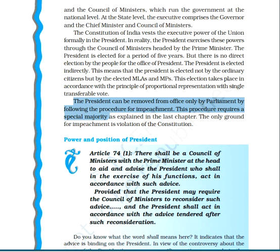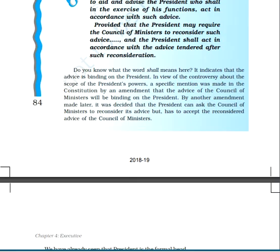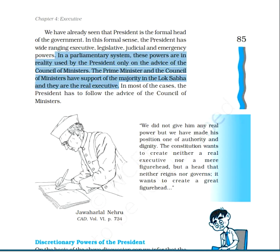The president can ask the council of ministers to reconsider a matter, but after reconsideration, if the council passes that advice again, the president shall act in accordance with the advice tendered after such reconsideration. The word 'shall' has been used, meaning the advice of the council of ministers will be binding on the president.